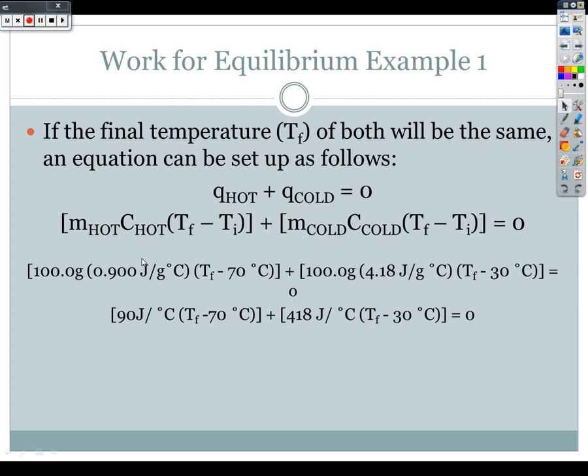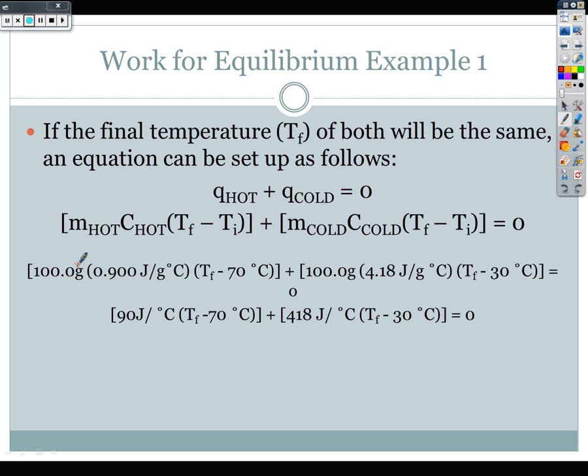So if I multiply this in, I can multiply my mass times my specific heat. I get 90 joules per degree Celsius because the grams cancel out. Let's cancel those grams out. So the grams cancel out and the grams are going to cancel out over here. And I get 418 joules per degree Celsius times my change in temperature.